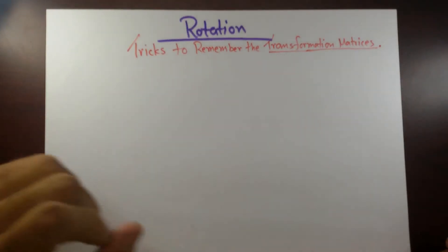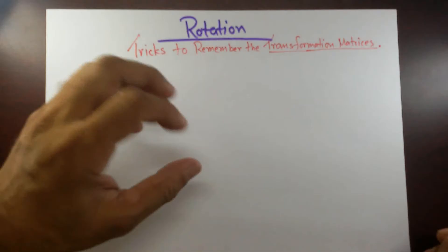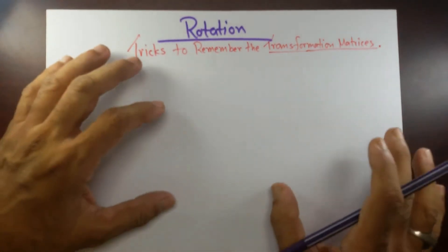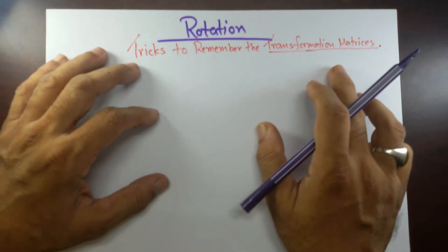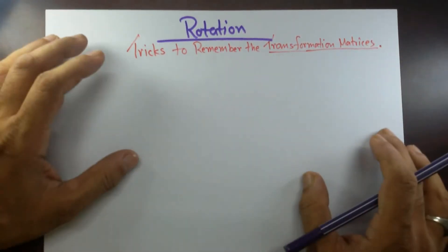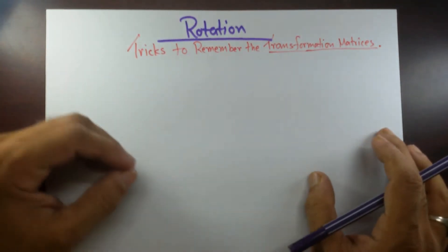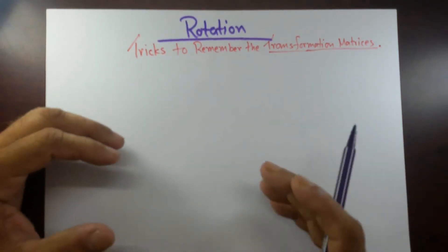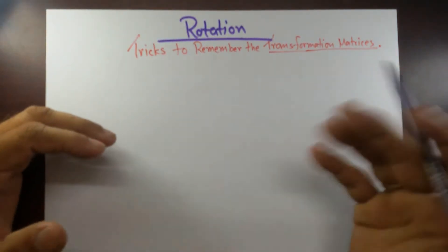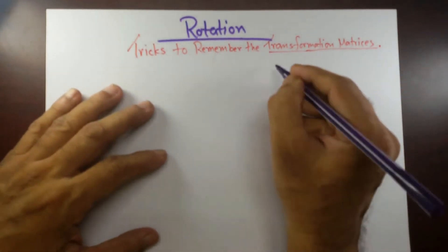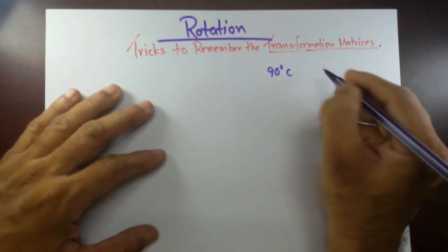Good morning. On today's lecture, I'll show you the rotation. You know that whenever you are describing a transformation, sometimes you need the transformation matrix to describe the rotation. It's one mark, but students find it very difficult to memorize or remember which one is which — like if you are having a 90 degree clockwise rotation.